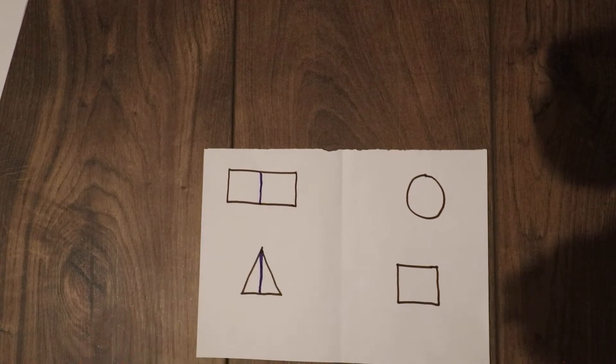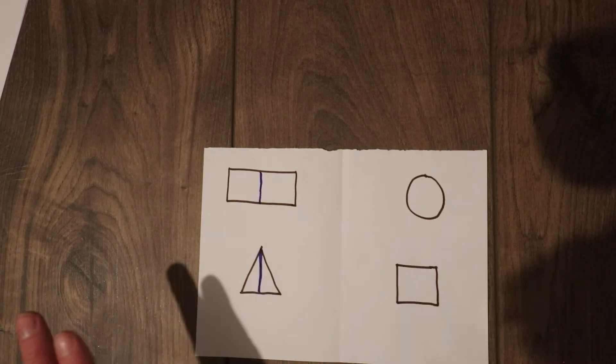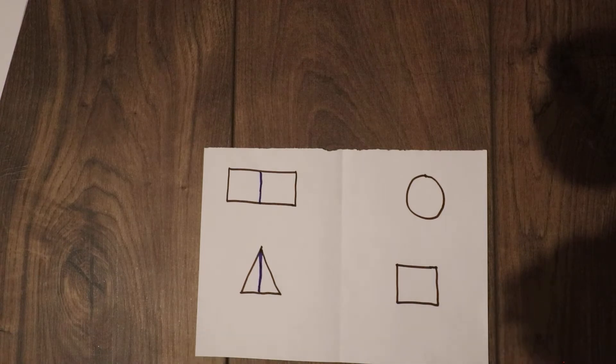This is a half and this is a half, this is a half and this is a half. Two halves make a whole.